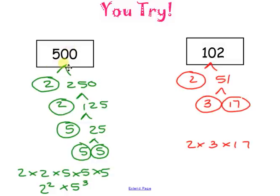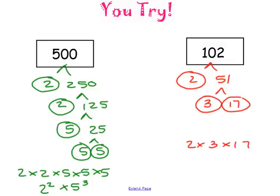You don't always have to start with 2, and you don't have to start with a prime number. For 102, what you should have ended up with is 2 times 3 times 17. This number 51 — a lot of kids think it looks weird and assume it's prime, but it is not prime. 5 plus 1 is 6, and 3 goes into 6 evenly, so it is divisible by 3.